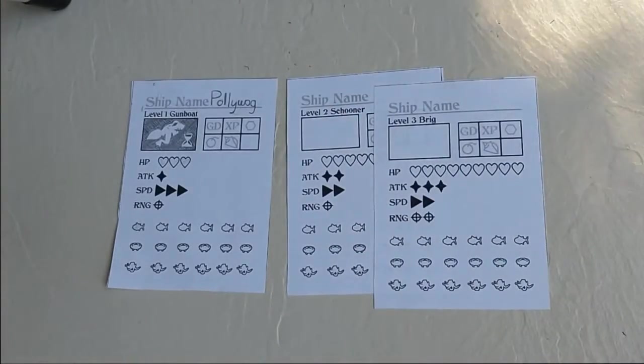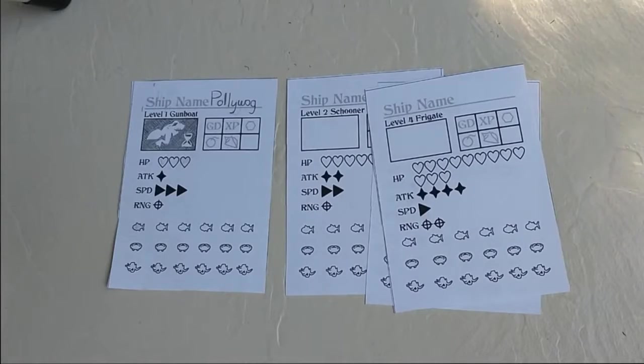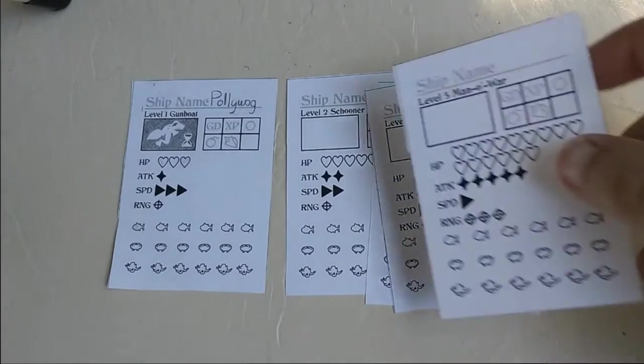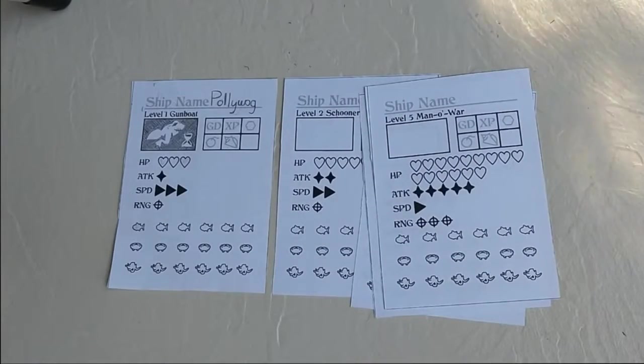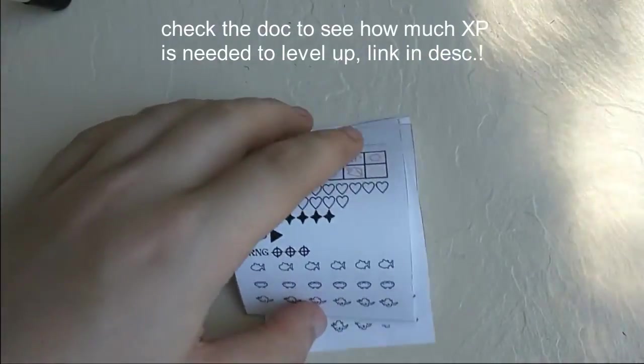You get a brig when you level up again, and then a frigate when you level up again, and then a man-o-war when you level up again. And the man-o-war is the most powerful flagship. So then, that's the setup. Now, let's get into the actual gameplay.